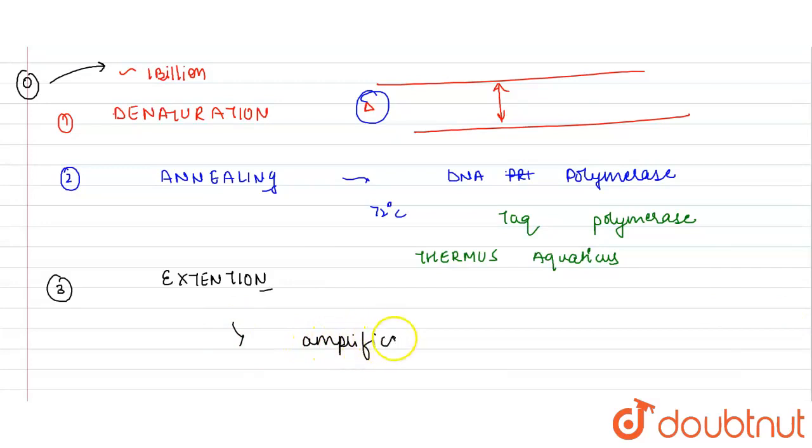The 30 cycles can result in approximately 1 billion copies of this desired DNA.